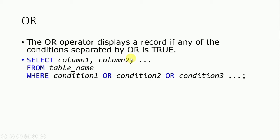The OR operator displays a record if any of the conditions separated by OR is true. The syntax is: SELECT column 1, column 2 FROM table WHERE condition 1 OR condition 2 OR condition 3, and so on. If any one condition is true, the record will be displayed.